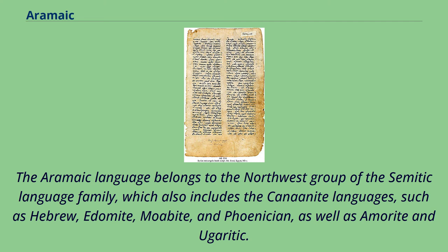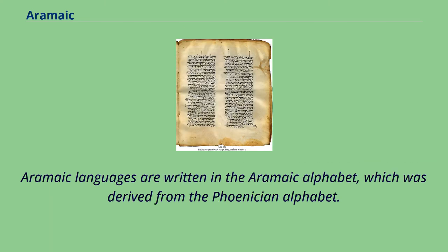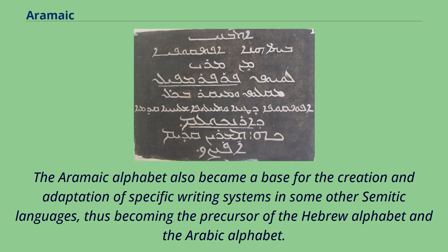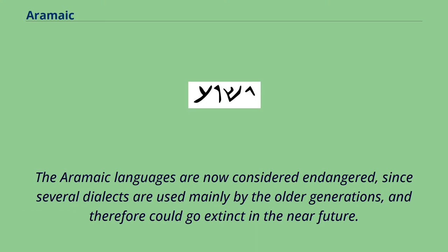The Aramaic language belongs to the northwest group of the Semitic language family, which also includes the Canaanite languages such as Hebrew, Edomite, Moabite, and Phoenician, as well as Amorite and Ugaritic. Aramaic languages are written in the Aramaic alphabet, which was derived from the Phoenician alphabet. One of the most prominent variants, still used in modern times, is the Syriac alphabet. The Aramaic alphabet also became a base for the Hebrew alphabet and the Arabic alphabet. The Aramaic languages are now considered endangered, since several dialects are used mainly by older generations and could go extinct in the near future.